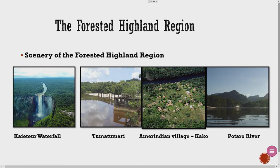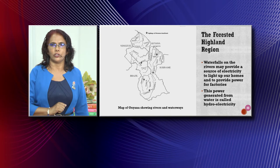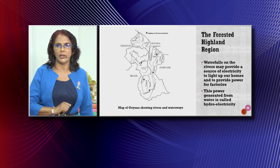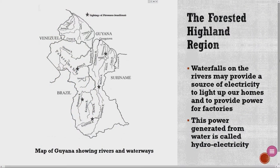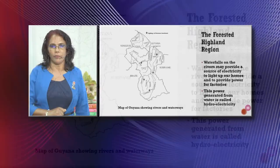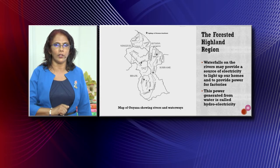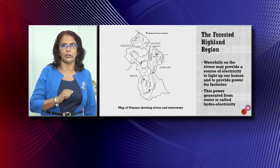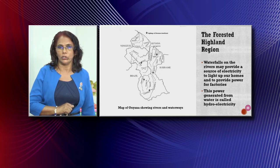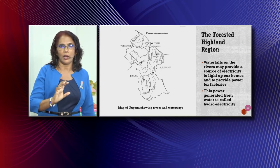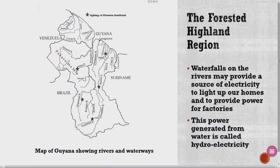Waterfalls on the rivers may provide a source of electricity to light up our homes and to provide power for factories. This power generated from water is called hydroelectricity. Years ago, Guyana started some of that in Lethem and at the village of Chumachamari — they had started using hydroelectricity, but they did not continue. Looking at our map, we can see a lot of rivers and waterfalls, including our three main rivers: the Essequibo, Demerara, and the Berbice River.